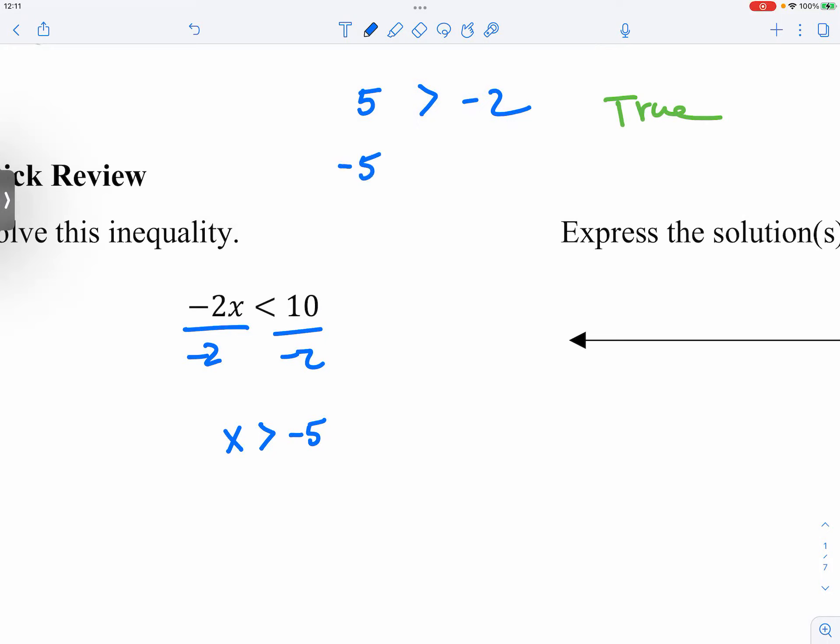So 5 becomes negative 5, and negative 2 becomes 2. And since we pretend that we don't know that we need to flip the sign, we keep the sign the same. And then it says negative 5 is greater than 2. And what kind of statement is this?